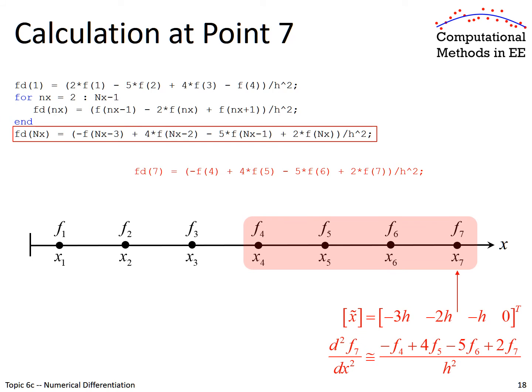Then we reach the very last point, which is a boundary point and requires its own special finite difference approximation. In the lower right I'm showing how that was derived — we did that a few slides ago. At this point, we have evaluated the second-order derivative at every point across the grid, including the boundary points, which got their own special equations.